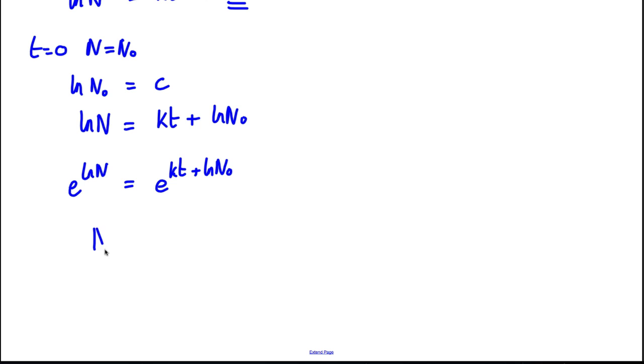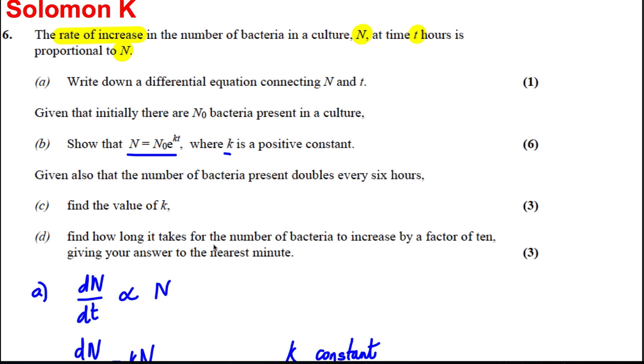So this would be e to the ln N is equal to e to the KT plus ln N₀. Now e to the ln N is simply N. And this here, we can write this as e^(KT) times e^(ln N₀), because e^(x+y) is clearly e^x times e^y. And so therefore, N is equal to, well, e to the ln N₀, that's just N₀. And N₀ multiplied by this is N₀e^(KT). And that's exactly what we were asked to do in part B for six marks and we're done.